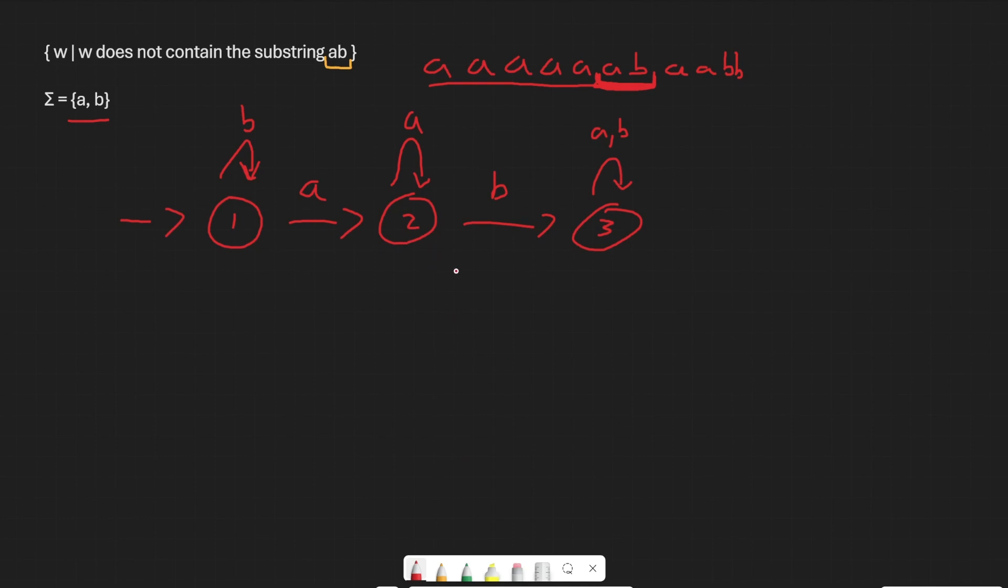So now that we have our algorithm here to detect if we have the substring ab, what are the accept states going to be? So our language here says that w should not contain the substring ab. On state three, the substring contains the substring ab. Therefore, the accept state should be these two. Because the only time that our string contains the substring ab is when we are on state three. Therefore, every other state that's not state three fits our language, it does not contain the substring ab.